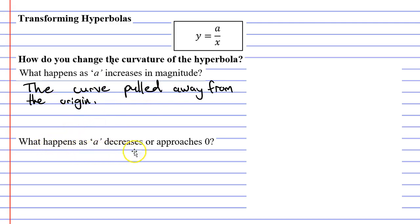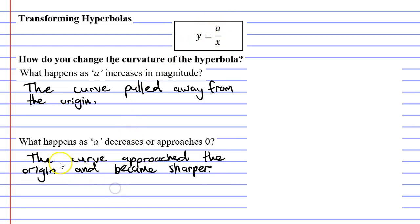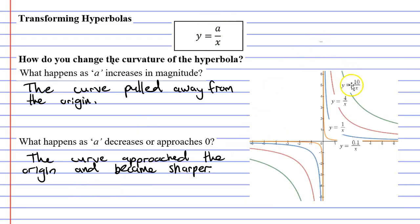What happens as a decreases or approaches 0? When we picked values of a that were really small, less than 1, we noticed the curve started to approach the origin and become sharper. With a really small decimal very close to 0, it would almost look like a right angle. When we had large values of a, the curve was further away from the origin; with small values close to 0, such as 0.1, we get sharper curves approaching a right angle shape.